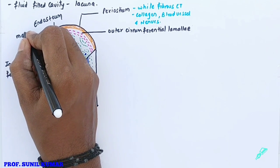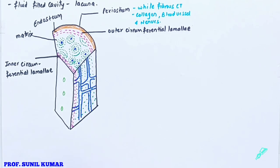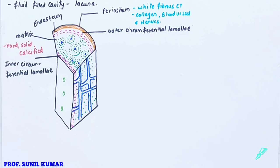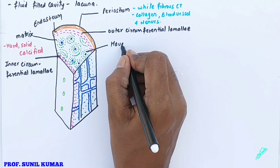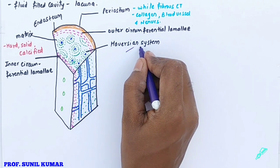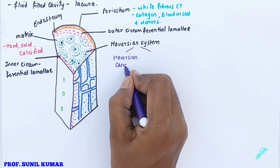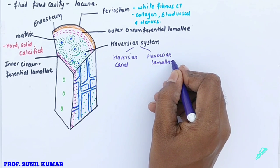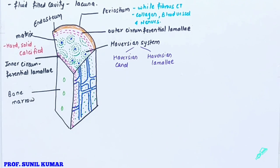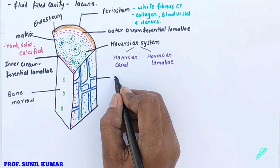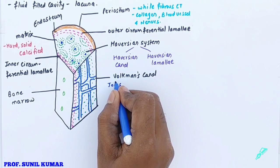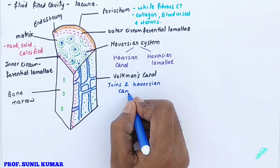The matrix is hard, solid, and calcified — made up of calcium. It contains a special chemical called ossein. Within the matrix you find the Haversian system, which consists of two parts: the Haversian canal and the Haversian lamella. All Haversian canals are connected to the bone marrow, which is rich in stem cells. Volkmann's canals connect all the Haversian canals to the bone marrow.